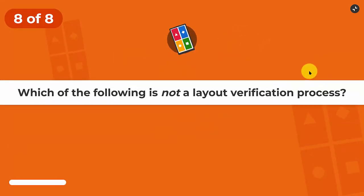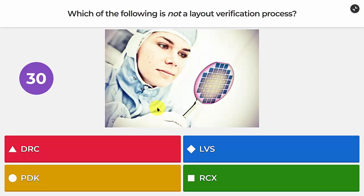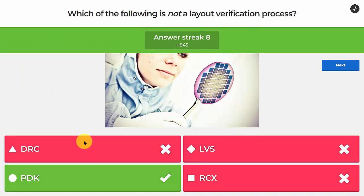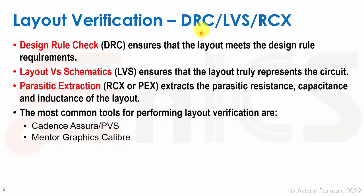Question eight: which of the following is not a layout verification process? DRC, LVS, PDK, or RCX? The answer is PDK. DRC is the Design Rule Check — the foundry provides a list of rules about minimum sizes and spacing, and a tool checks the entire chip layout against every rule. In nanoscale technologies this can involve thousands of complex rules. Any violations must be fixed before tape-out.